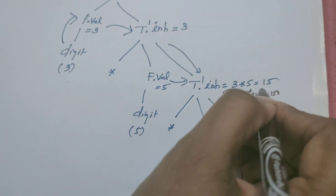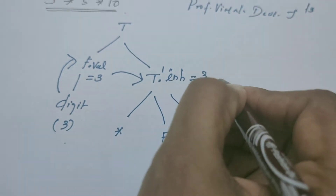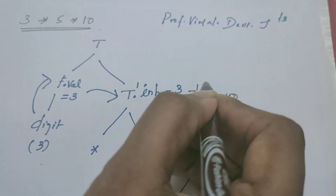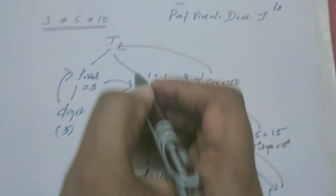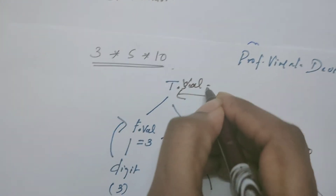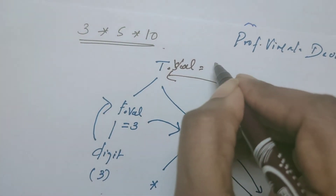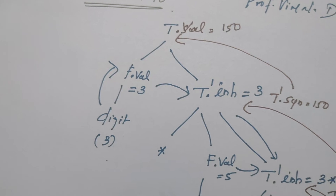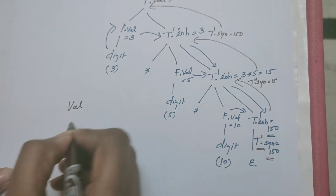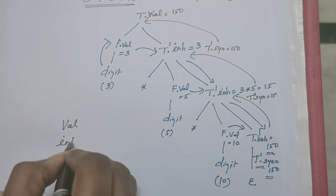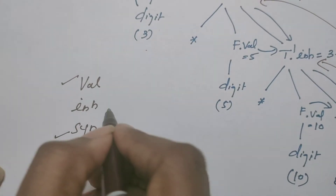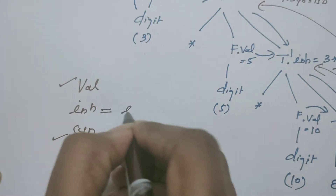From here, the value must be stored to its parent node, and likewise it should reach the root node of the parse tree. When the value is stored from child to parent, that attribute becomes a synthesized attribute — T'.SYN is equal to 150. This value is passed to the root of the parse tree, which is also a synthesized attribute equal to 150. So to define this annotated parse tree, we have used three attributes: value, INH, and SYN. Value and SYN are synthesized attributes; only INH is an inherited attribute.